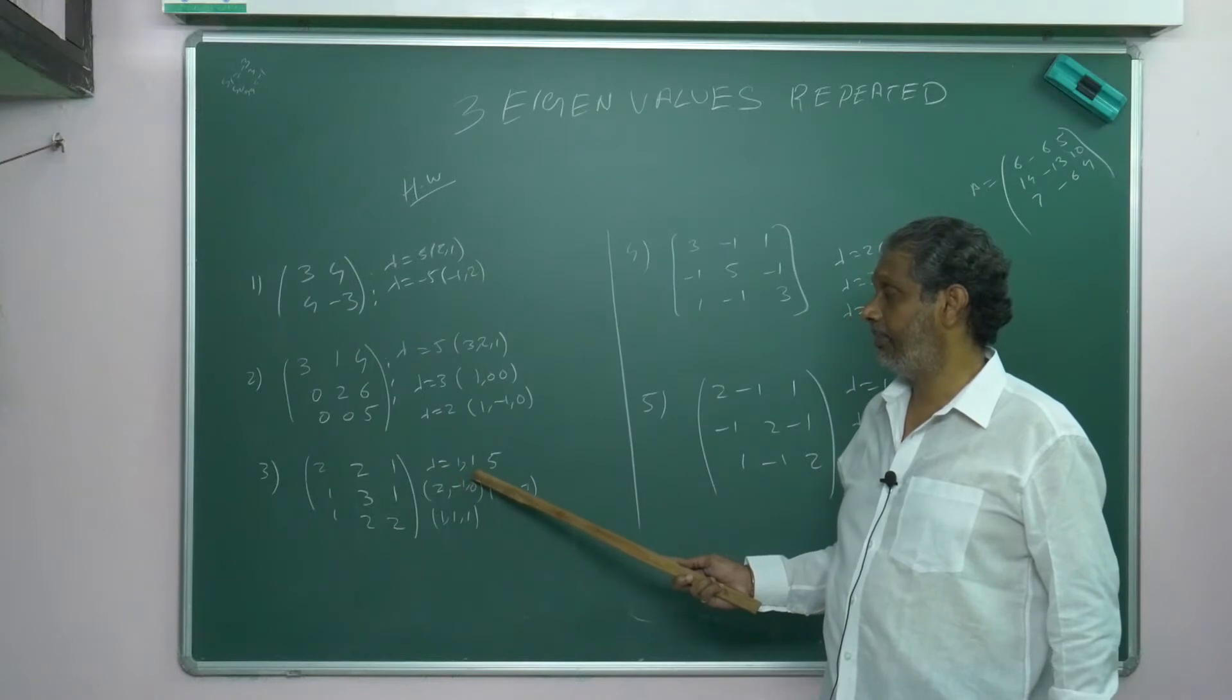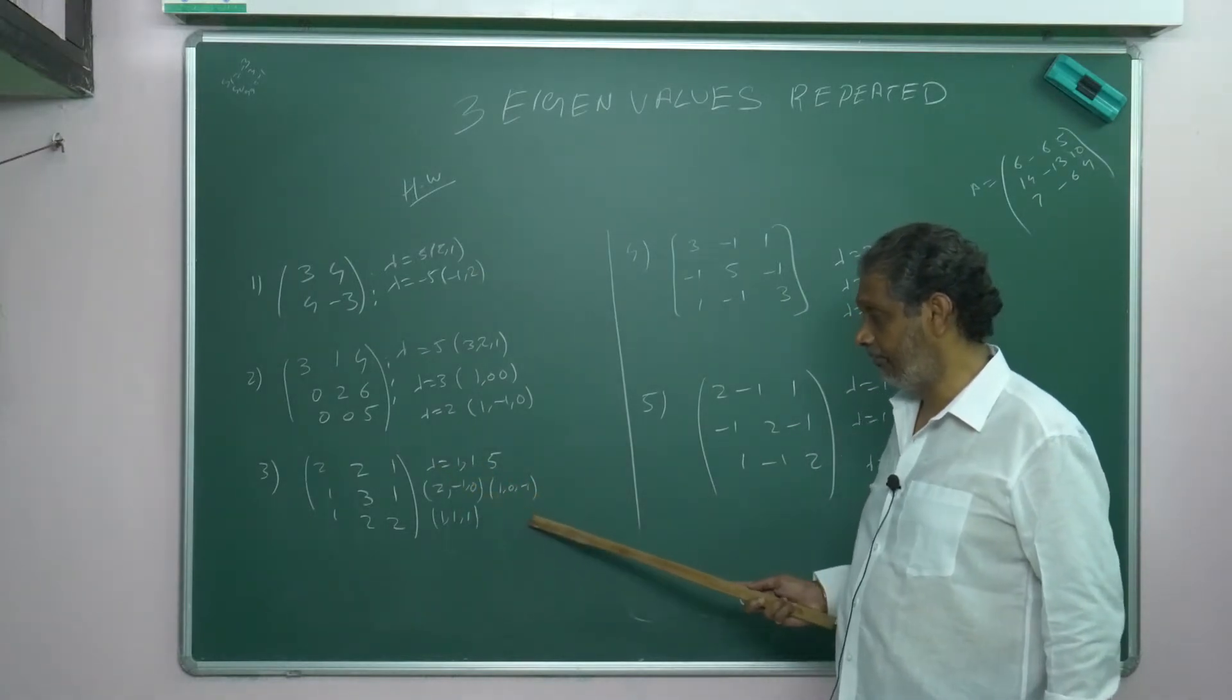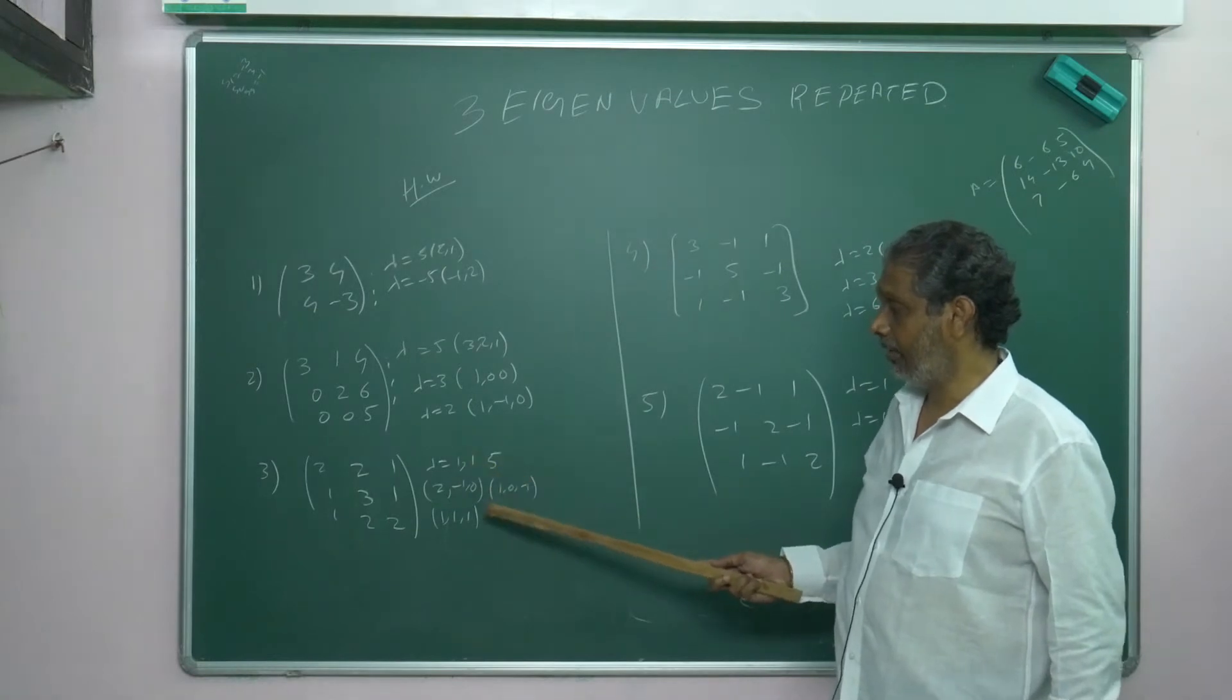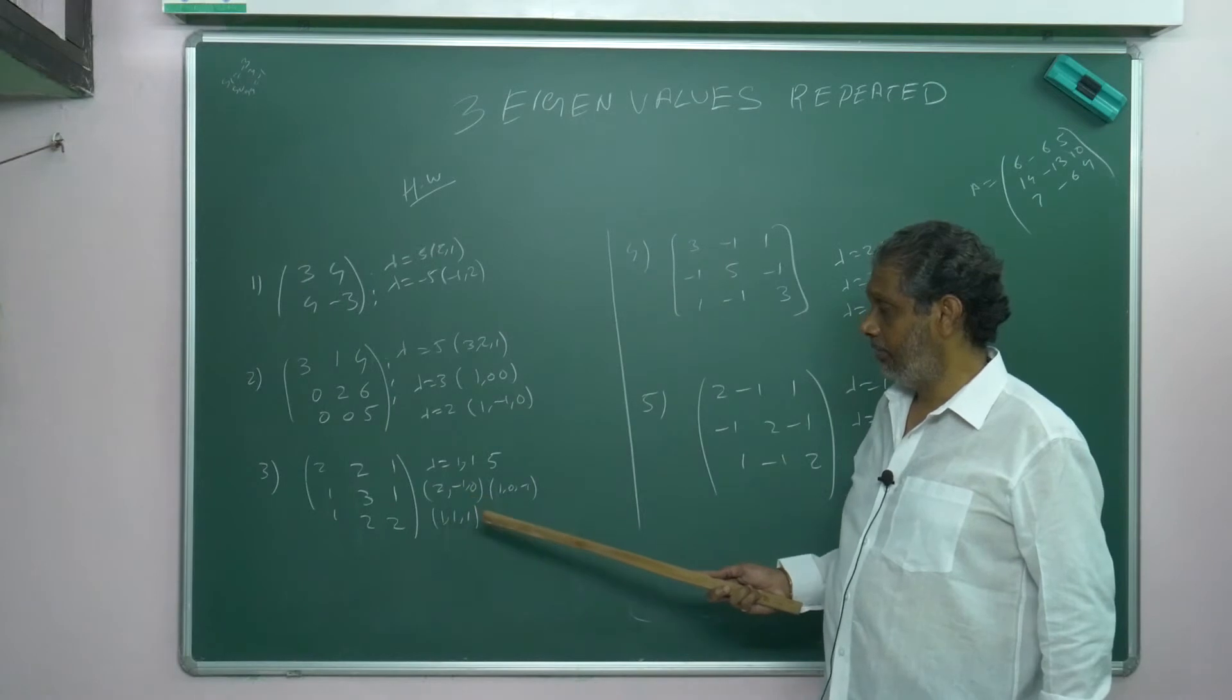Two eigenvalues are repeated. First two values: lambda equals 1. Third value: lambda equals 5. Eigenvectors are (2, -1, 0) and (1, 0, -1).